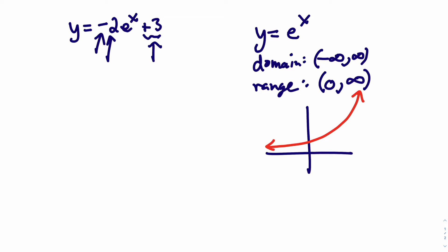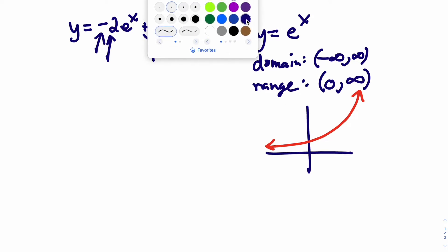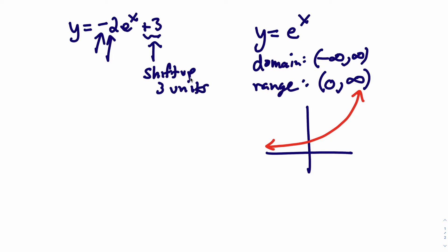So it's a matter of figuring out what's been done to that graph. The plus 3 is a shift up 3 units. That's not going to affect the domain; this affects the range.